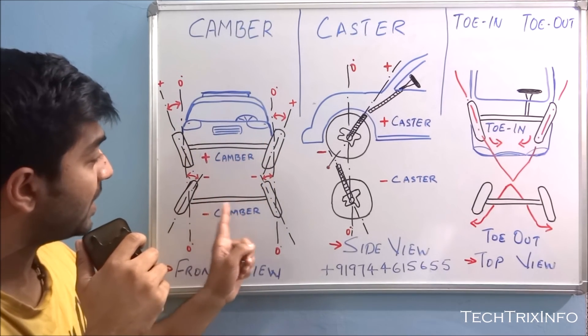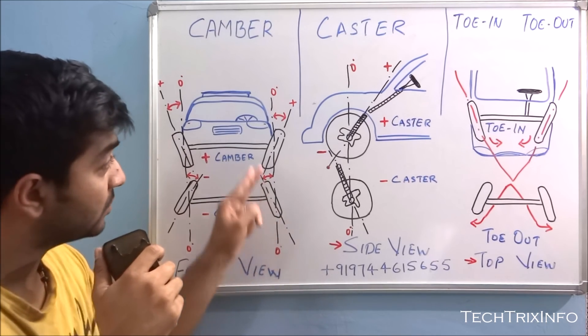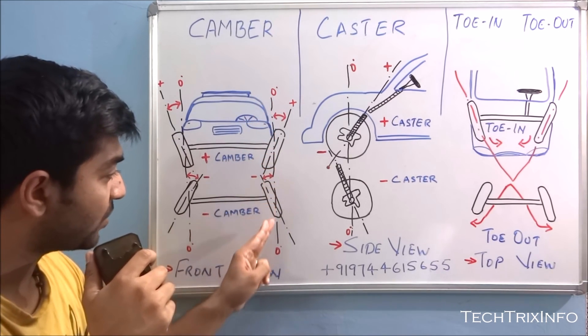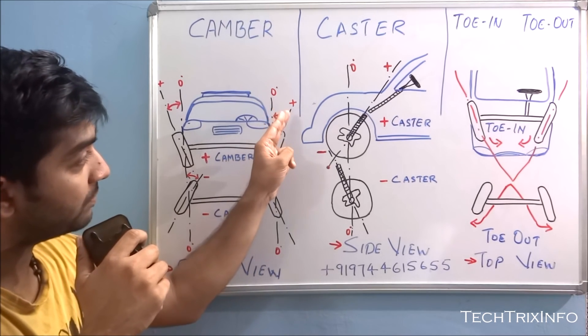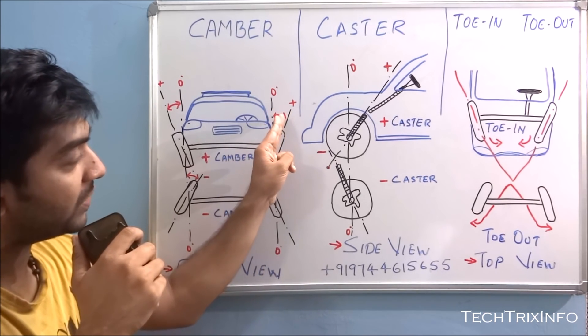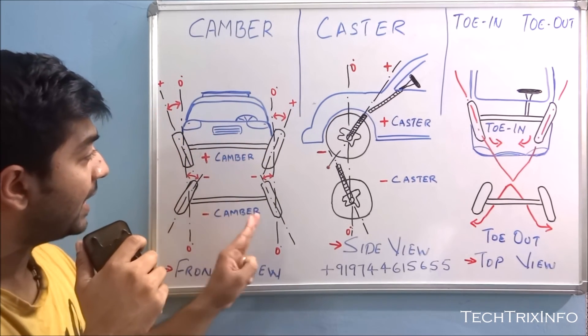This is positive camber. And when the tire's bottom end is projecting outside, this is negative camber. So this is a vertical axis, zero angle, you can see here. And when the tire goes outside from the top, this is the angle which is creating. That's the camber angle. This is a positive camber here.